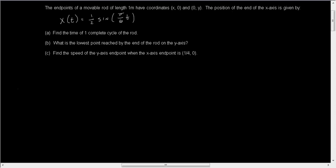Our problem tells us that the endpoints of a movable rod of length one meter have coordinates (x, 0) and (0, y). The position of the end on the x-axis is given by x(t) = 1/2 sin(πt/6).